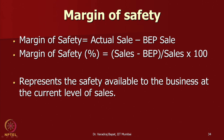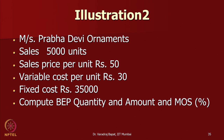Margin of safety represents the safety available to a business at its current level of sales, because everybody wants to avoid losses. To avoid losses you stay above a certain level of sales; how much above that level is the margin of safety. The formula is: MOS = Actual Sales minus Break-Even Sales, either in units or in rupees. As a percentage: (Sales minus BEP) divided by actual sales. Now let us do a simple illustration — Prabha Devi Ornaments: sales of 5,000 units, selling price 50, variable cost 30, fixed cost 35,000. Compute BEP quantity, BEP amount, and MOS as a percentage.